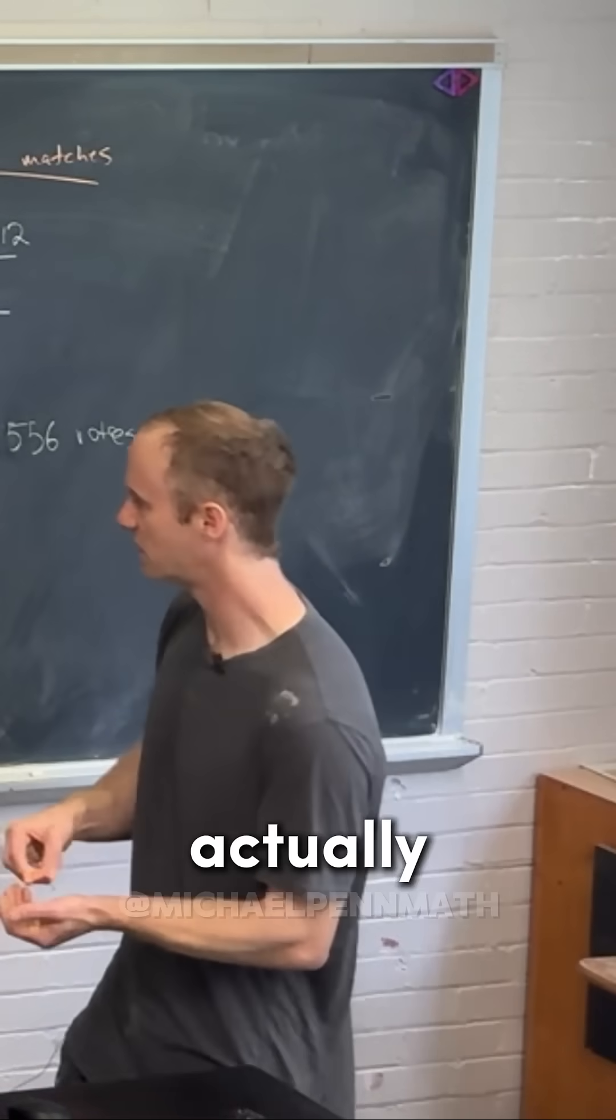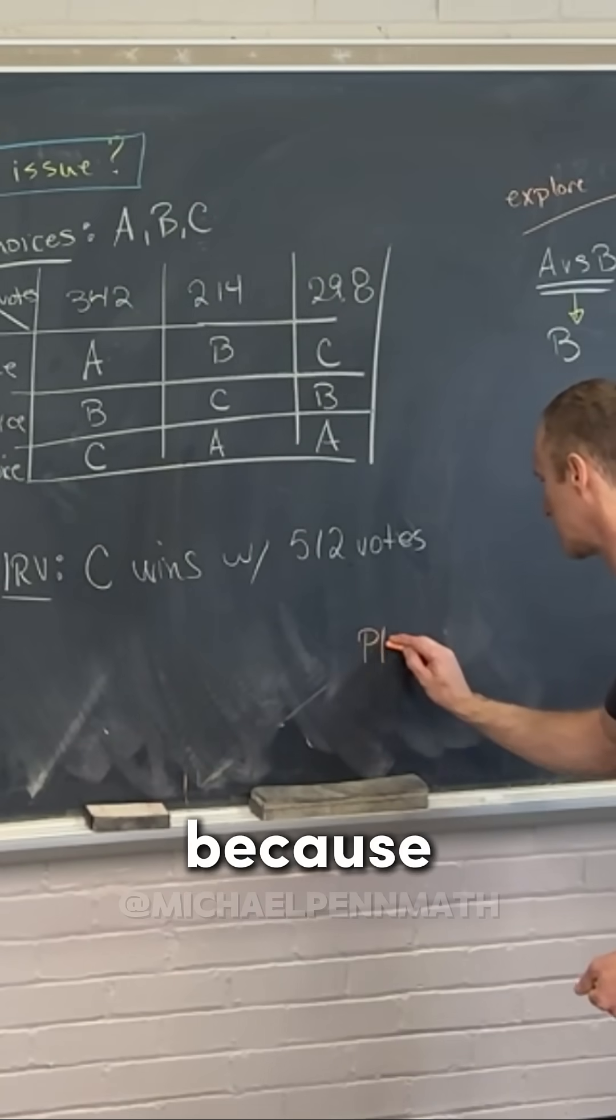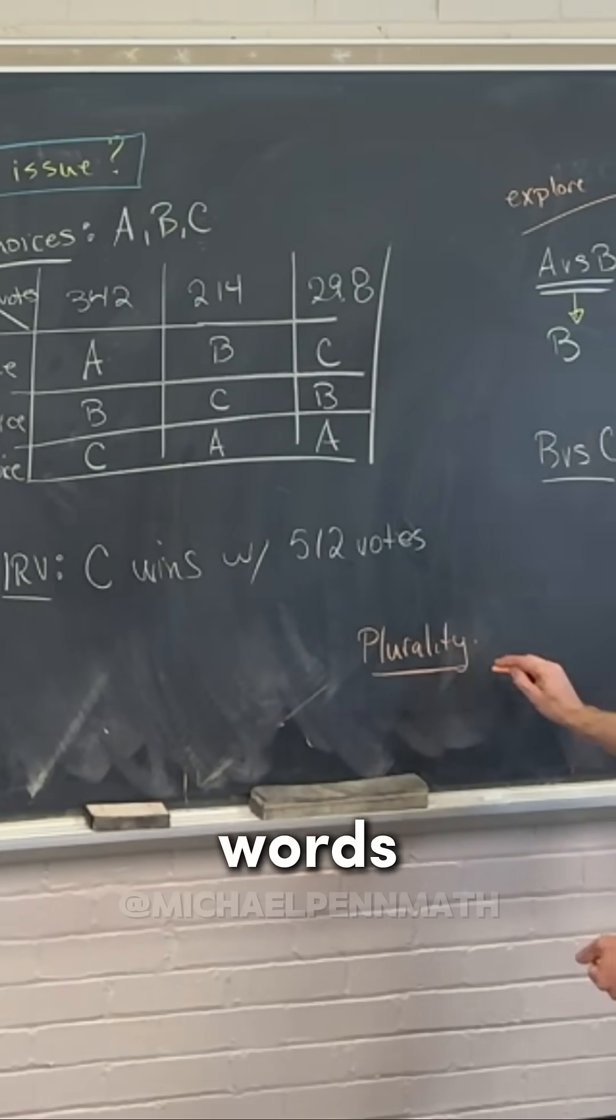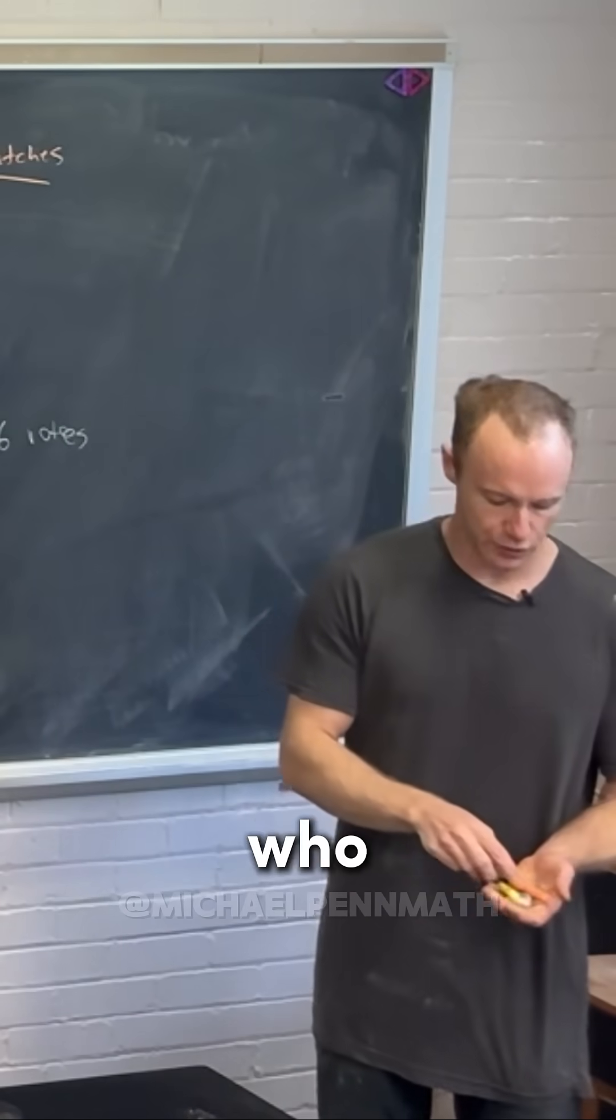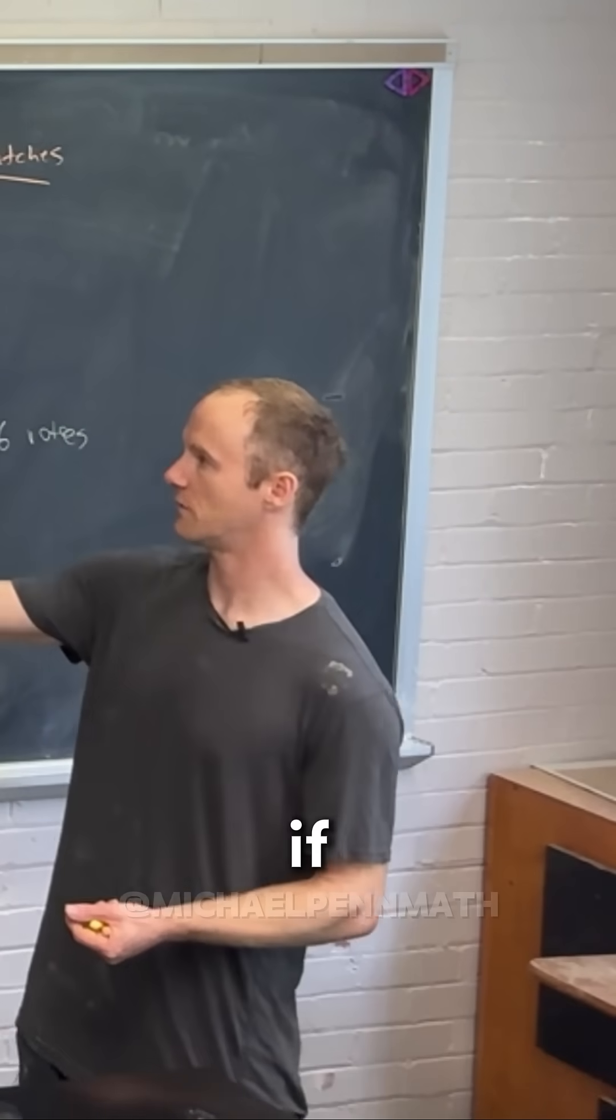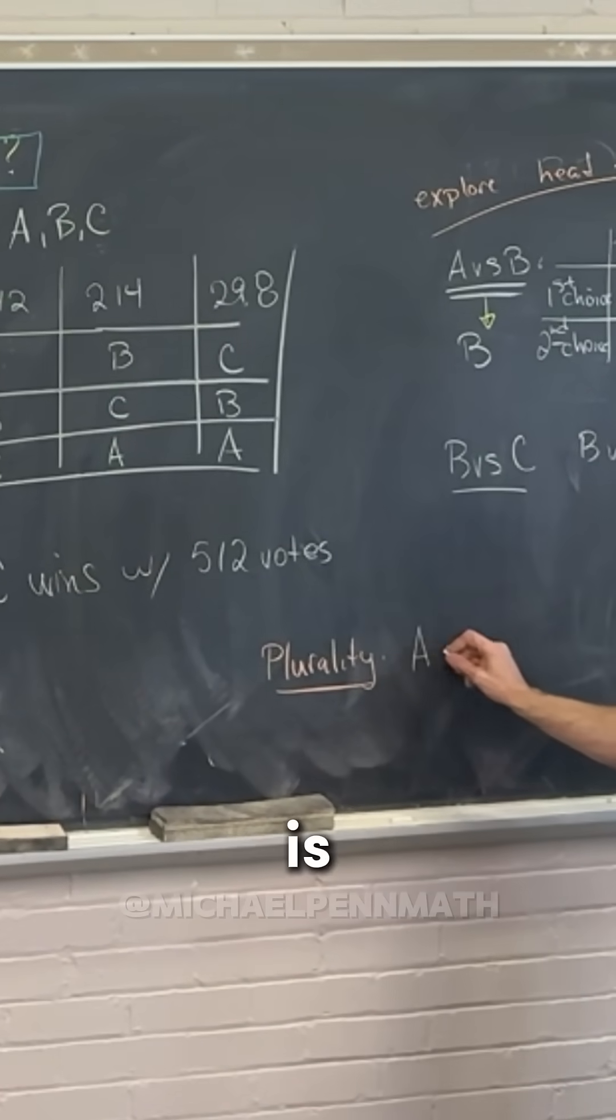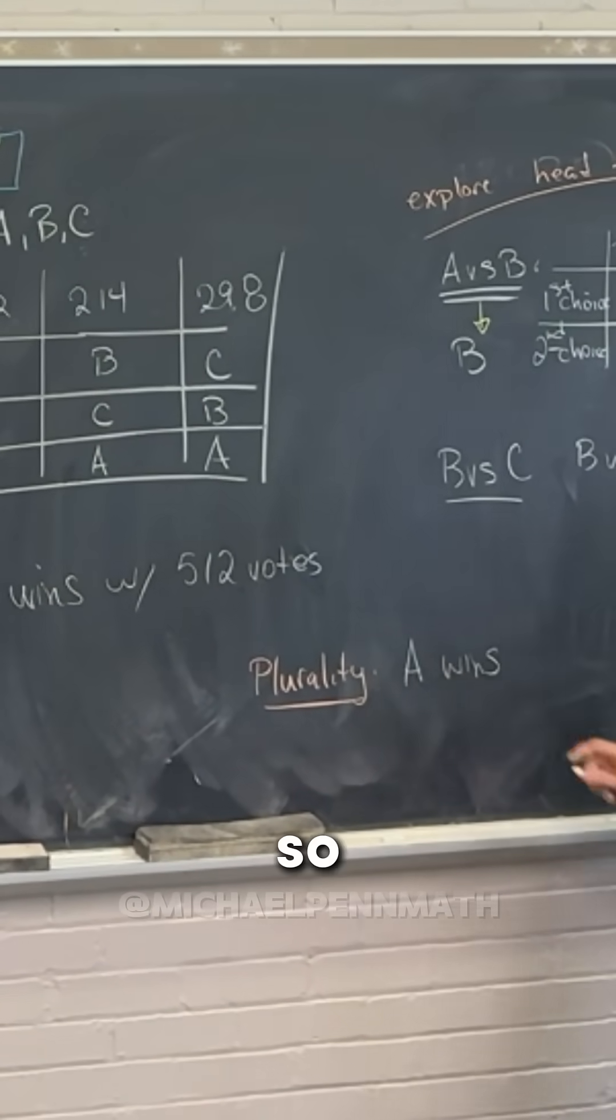And then it's actually a bigger problem here because what if we do just plurality? In other words, one round and who has the most first place votes? Well, if we just look at the original ballot, the person with the most first place votes is A. So A wins.